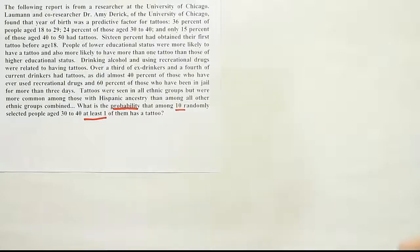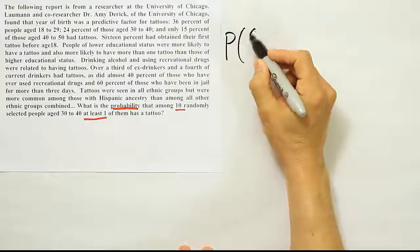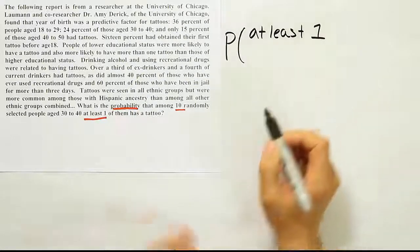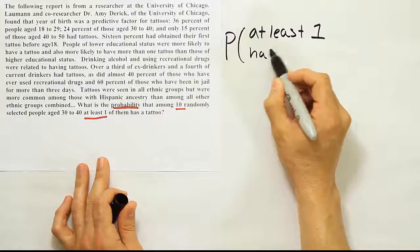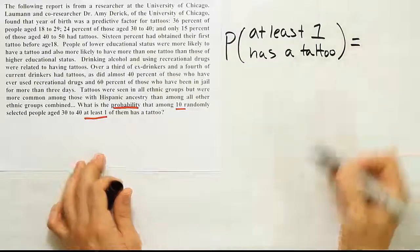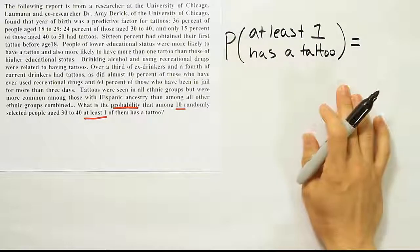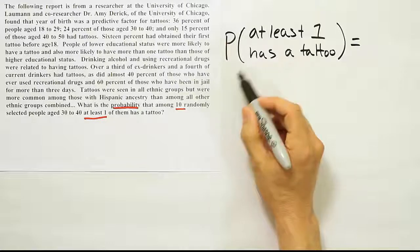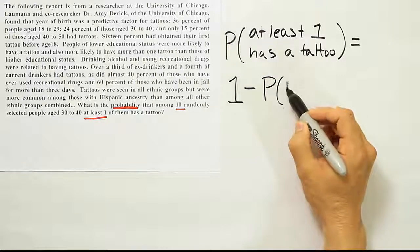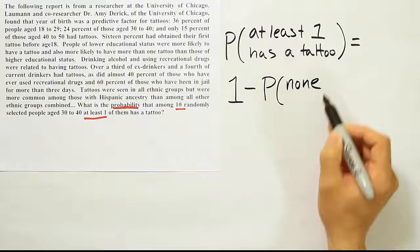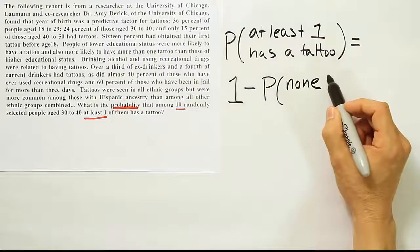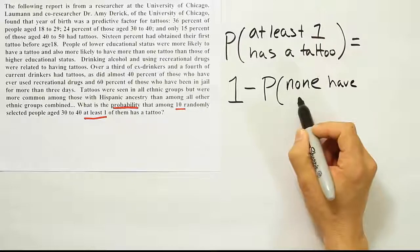So let's start with that. The first thing to write down is that we're looking for the probability that at least one, in this case, has a tattoo. So we have this nice relationship that goes with this formula. That relationship says that whenever you're working with the probability of at least one, you can write one minus the probability of none. And then whenever you add it in here, in this case at least one has a tattoo, you write one minus the probability that none have a tattoo.